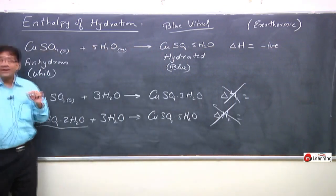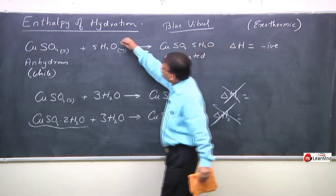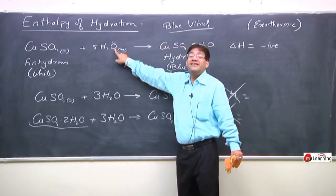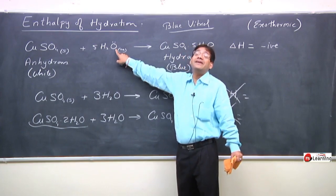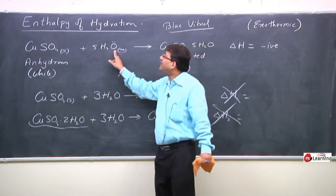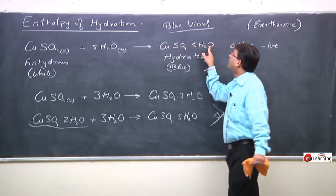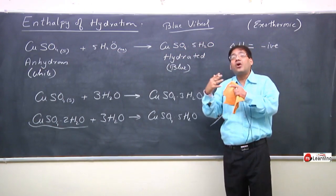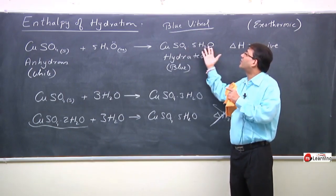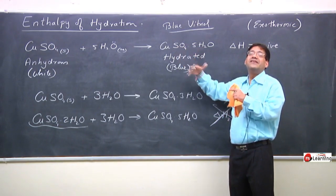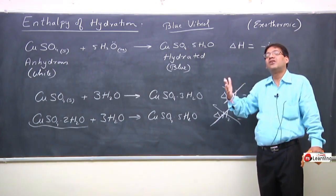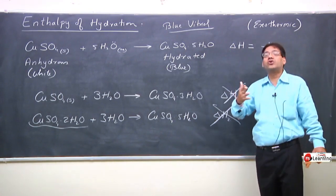Generally, during hydration, the lone pairs of the oxygen atom in water molecules get donated into the empty d-orbitals of the copper ion. This forms coordinate bonding between water molecules and copper sulfate. Due to the formation of this coordinate bonding, an enormous amount of energy — enormous amount of heat — is liberated. That's why hydration is an exothermic phenomenon.